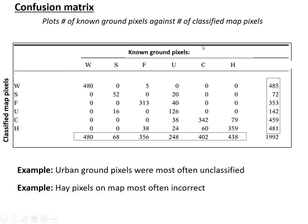The confusion matrix also gives us a lot of other information. For example, we can ask which type of ground pixel was most often misclassified. That's going to be urban — of the 248 total pixels that were on the ground, only 126 were correctly classified. Likewise, you can ask which class on the map is most often wrong. That's going to be hay — of 481 total hay pixels on the map, only 359 are correct. So you can look at this through the lens of how accurately you represented the ground pixels, or how likely pixels on the map are to be wrong.